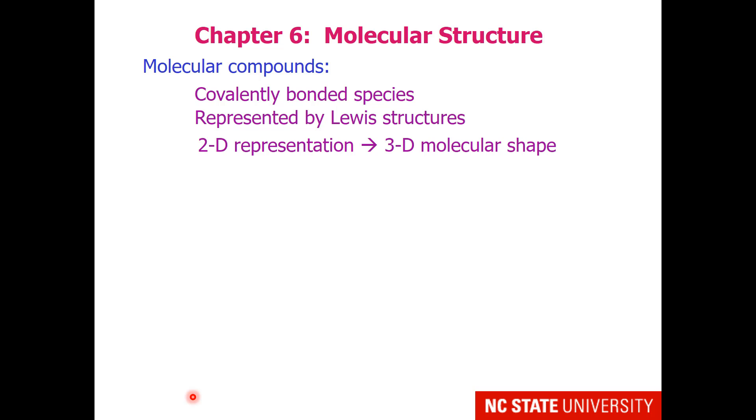Thus far, what's been presented about molecular compounds is that they are covalently bonded, and their attachment of atoms can be represented by Lewis structures. But we need to get from a two-dimensional representation on paper to three-dimensional shapes. The theory for this is known as VSEPR, or valence-shell-electron pair repulsion model.